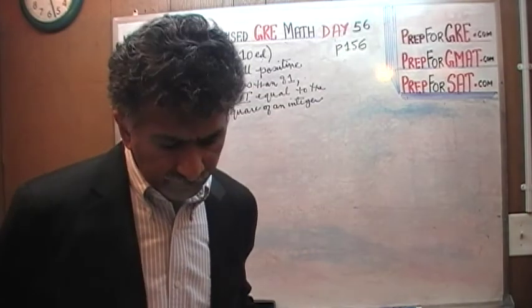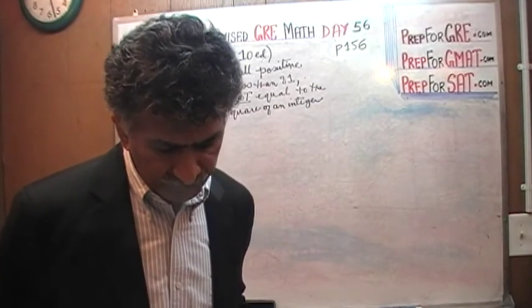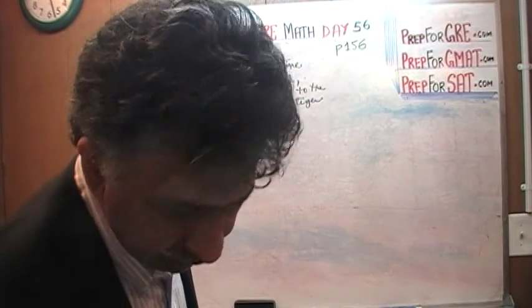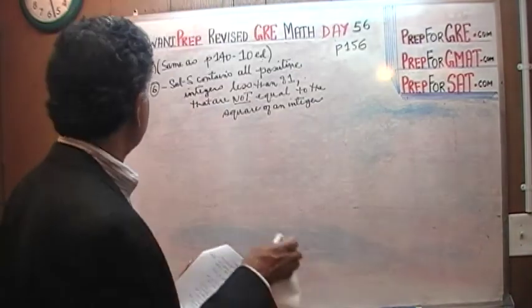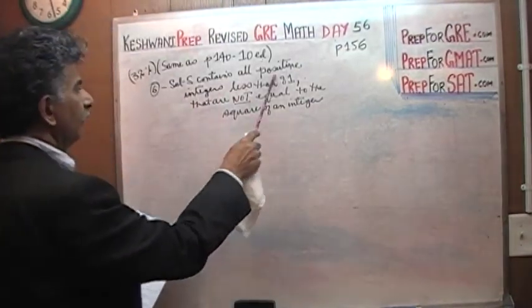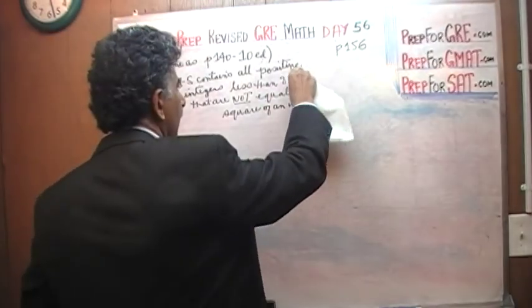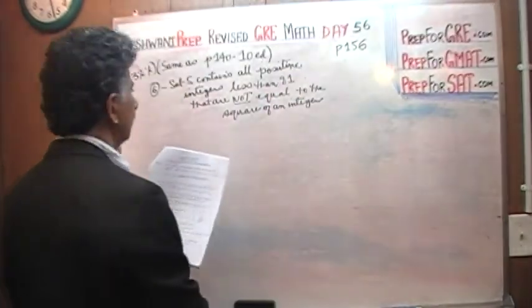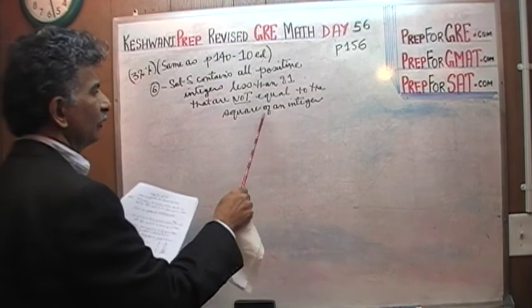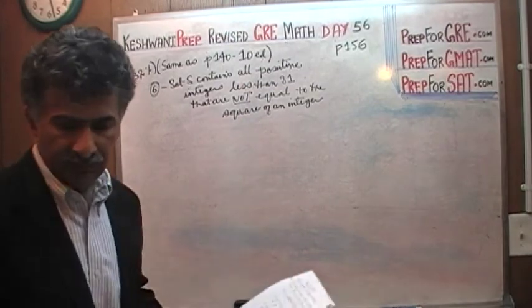It says: Set S contains all positive integers less than 81 that are not equal to the square of an integer. What does that mean?